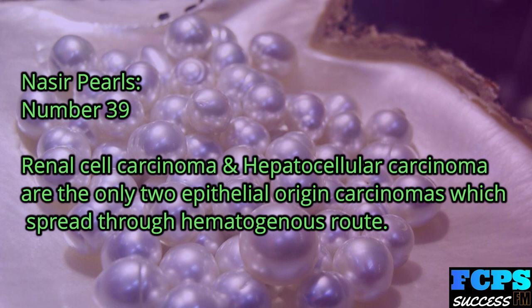Nasir Pearl number 39: Renal cell carcinoma and hepatocellular carcinoma are the only two epithelial-origin carcinomas that spread via the hematogenous route.